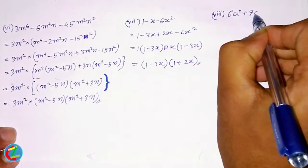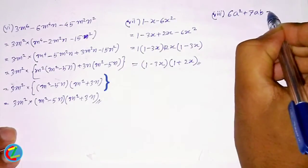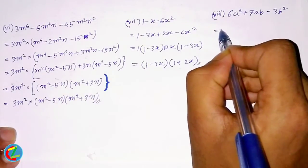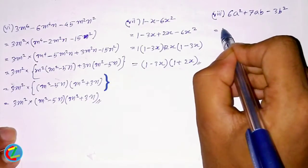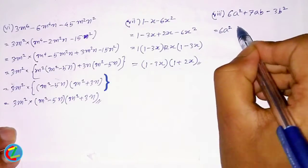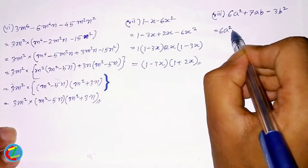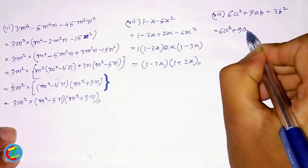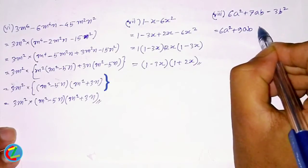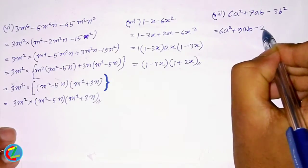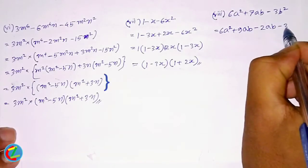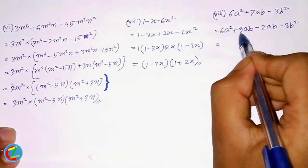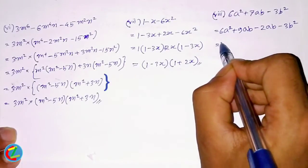6a squared plus 7ab minus 3b squared. Then 3b squared plus 7ab. And 5b squared plus 8b squared — working through the factoring of this expression.